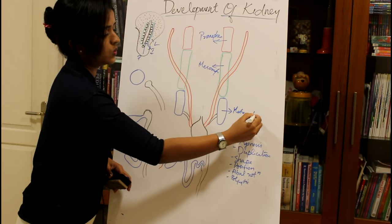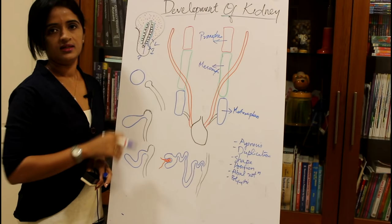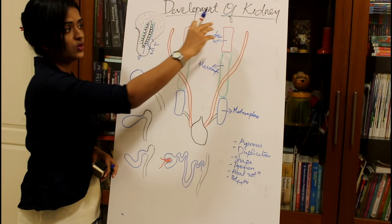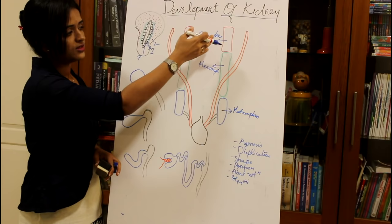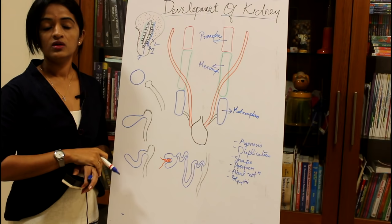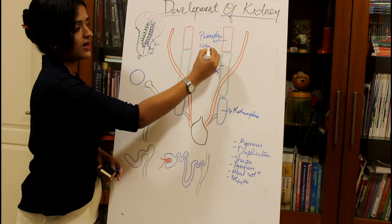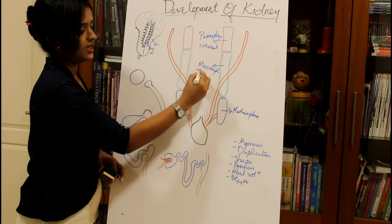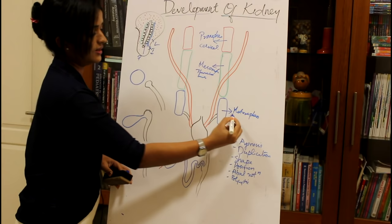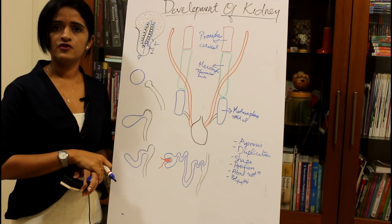All three stages are seen in human kidney during developmental phases. The pronephros is seen in the cervical region, the mesonephros is seen in the thoracolumbar region, and the metanephros is seen in the sacral region. These are the three segments derived from the nephrogenic cord.